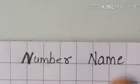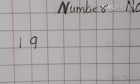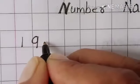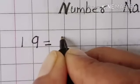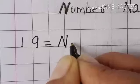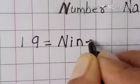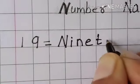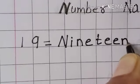Number Name. Nineteen. What is the spelling of nineteen? N I N E T double E N.